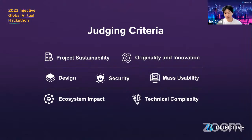For judges, we've invited industry experts from leading projects and VCs. Your submission will be evaluated through seven aspects: project sustainability — can this project continue to grow and evolve, and is it built to be timeless? Design — is the user experience well thought out? Security — is the project properly tested with relevant unit tests? Originality and innovation — how creative and unique is the project? Mass usability — is the idea feasible and adaptable across ecosystems? Ecosystem impact — how impactful is the submission for the larger Injective ecosystem? And technical complexity — does the interaction with Injective demonstrate quality software development, how well was the idea executed, does the project work as designed, and what level of skill was required to build it?